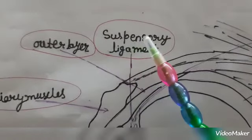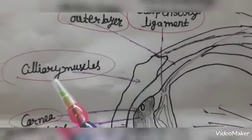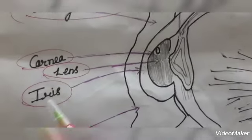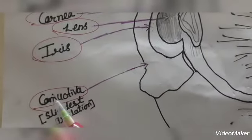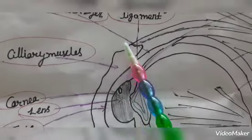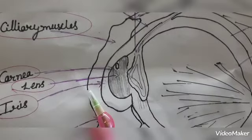First one is suspensory ligament, outer layer, ciliary muscles, cornea, lens, iris, conjunctiva. Just see, I just made here very clearly, just see its locations.